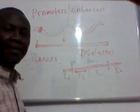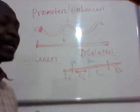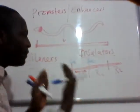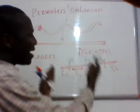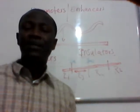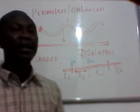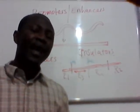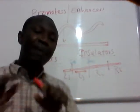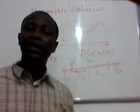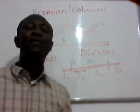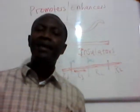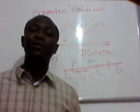Insulators are there to prevent the over-expression of a gene into other regions — they prevent the expression of genes in areas that are not needed to be expressed at that particular time. So to summarize: promoters, when they bind, increase the rate of gene expression; silencers reduce or suppress the rate of gene expression; and insulators prevent the over-expression of your gene.